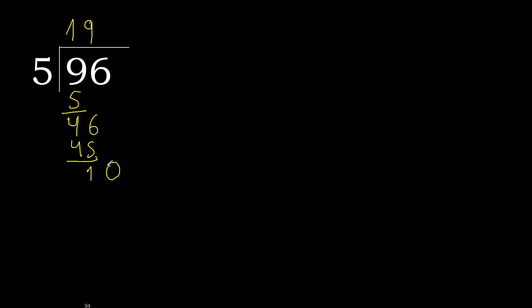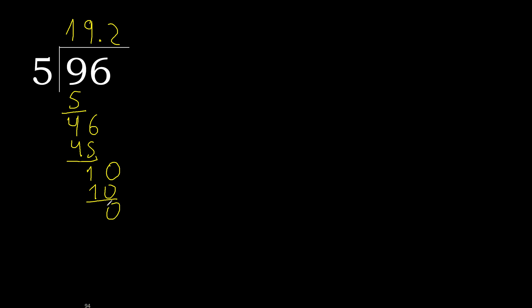That is not a number, therefore complete with 0 and a decimal point. Bring down 0 to get 10. 5 multiplied by 2 is 10. 10 minus 10 is 0. Therefore finish.